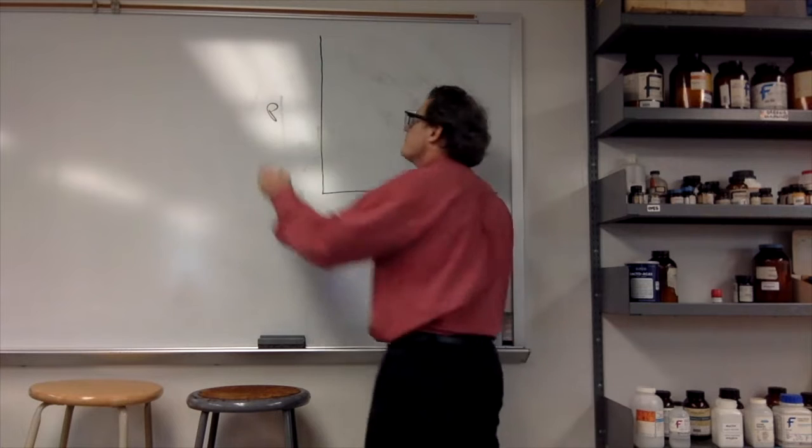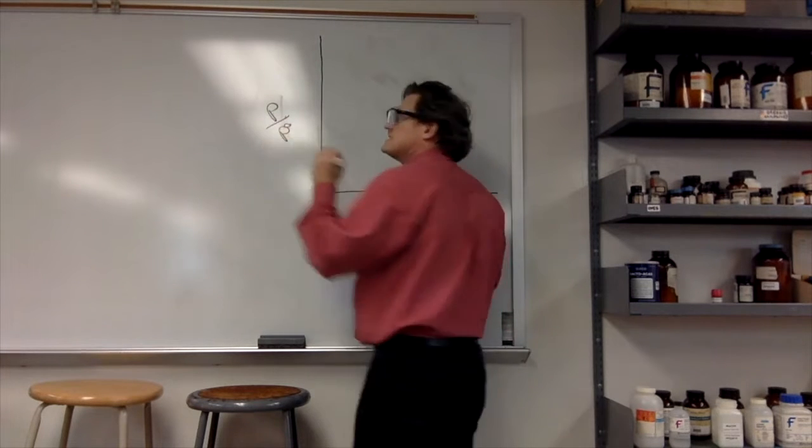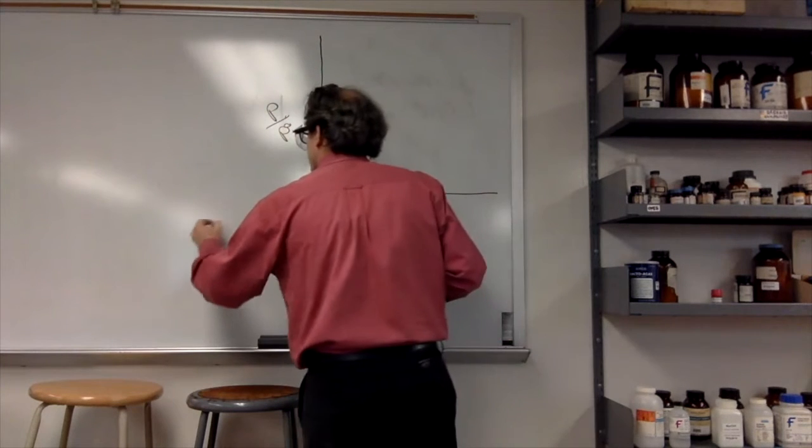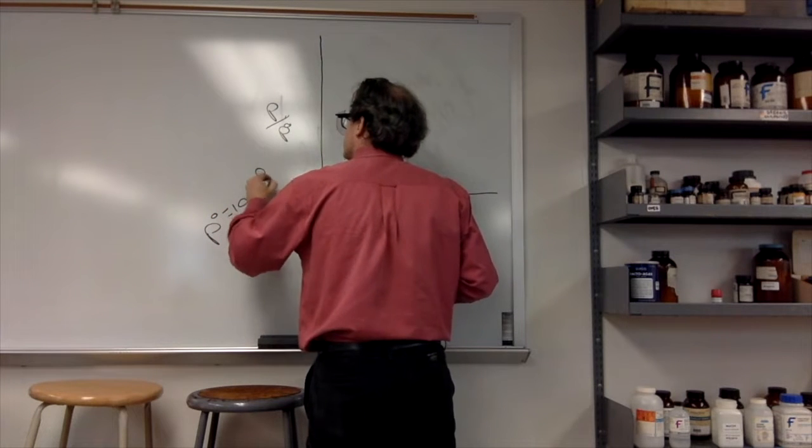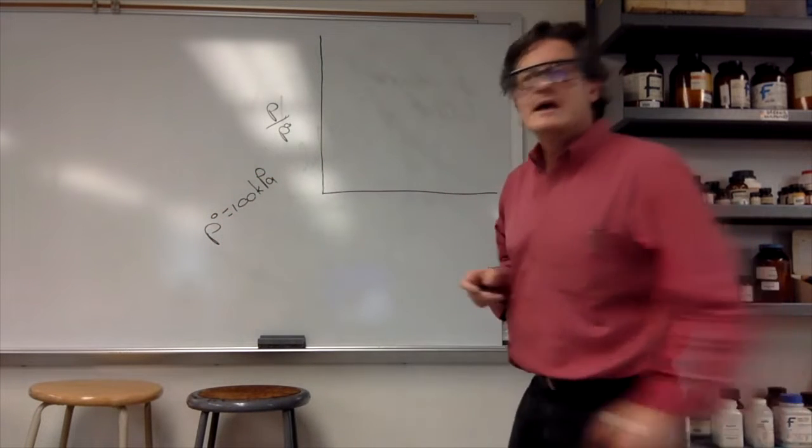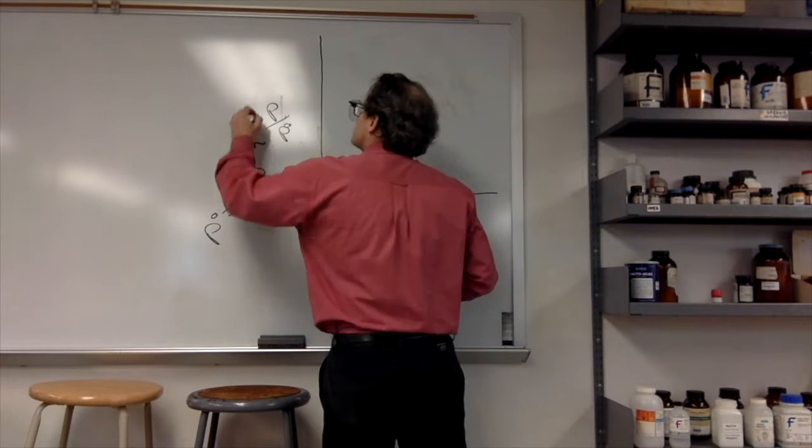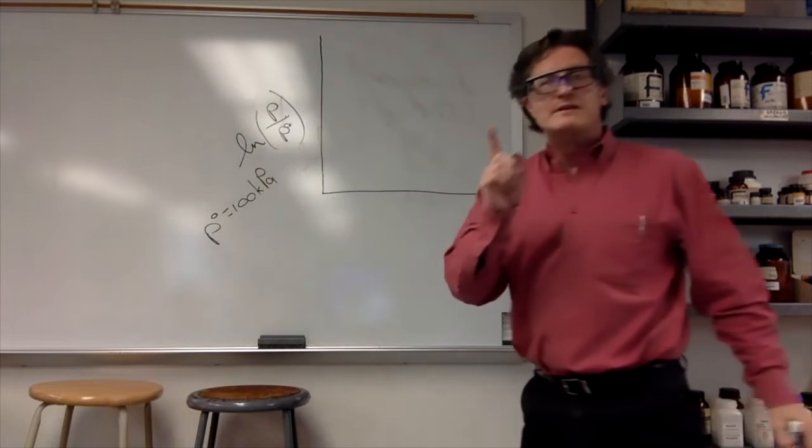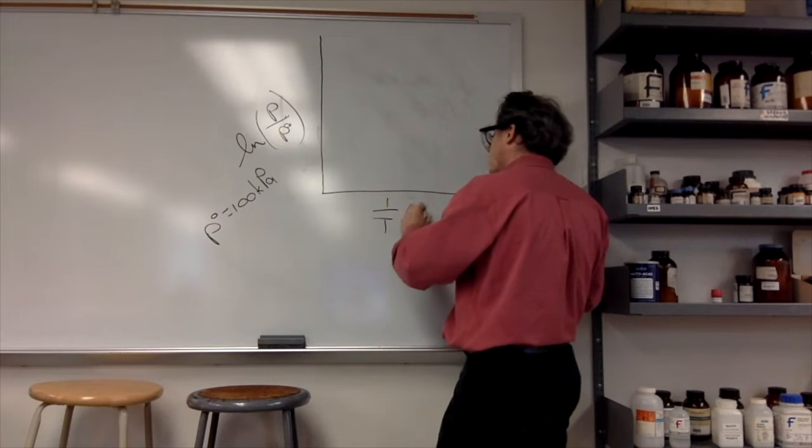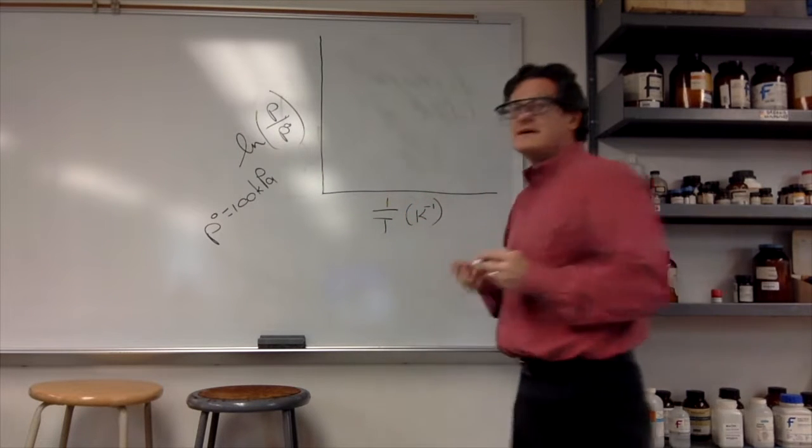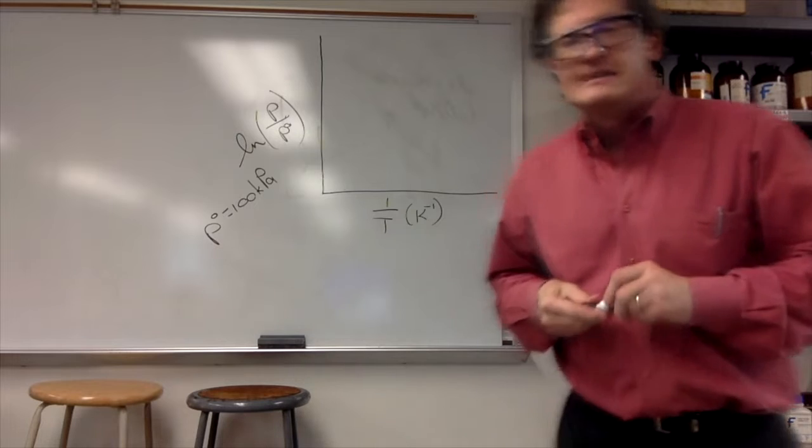Standard pressure is just 100 kilopascals. We're going to take the natural log of it, plot that versus 1 over T. The data came in Celsius; we have to convert that to Kelvin, 1 over that.